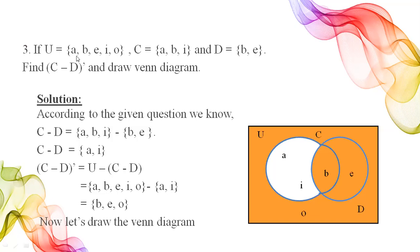For the last example, the universal set U contains alphabets a, b, e, i, o. Set C contains elements a, b, i, and set D has elements b and e. We need to find (C minus D) whole complement and draw the Venn diagram. First we solve the bracket: C difference D. Elements of C are a, b, i and elements of D are b and e, so C difference D equals {a, i} — we do not write b.